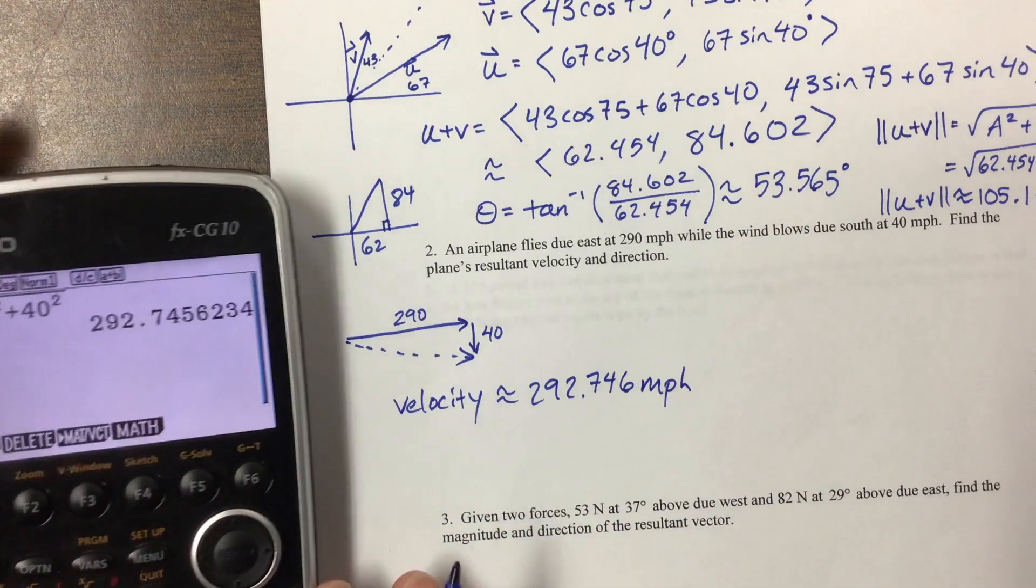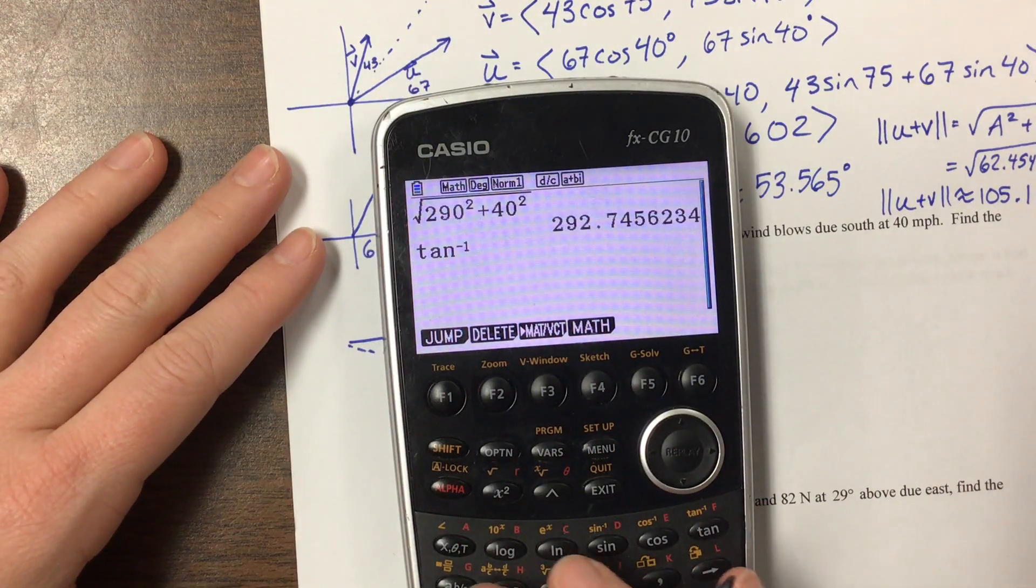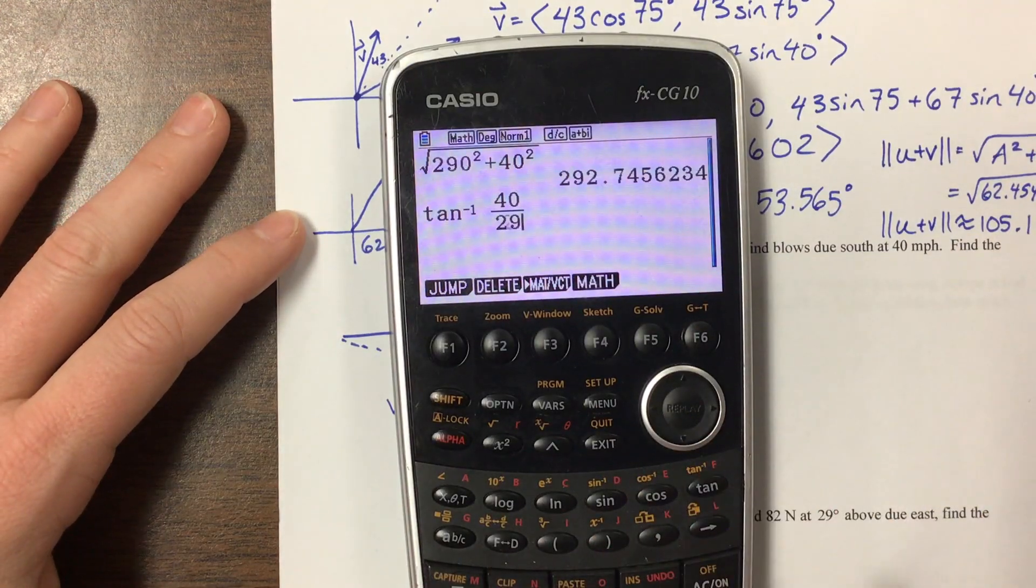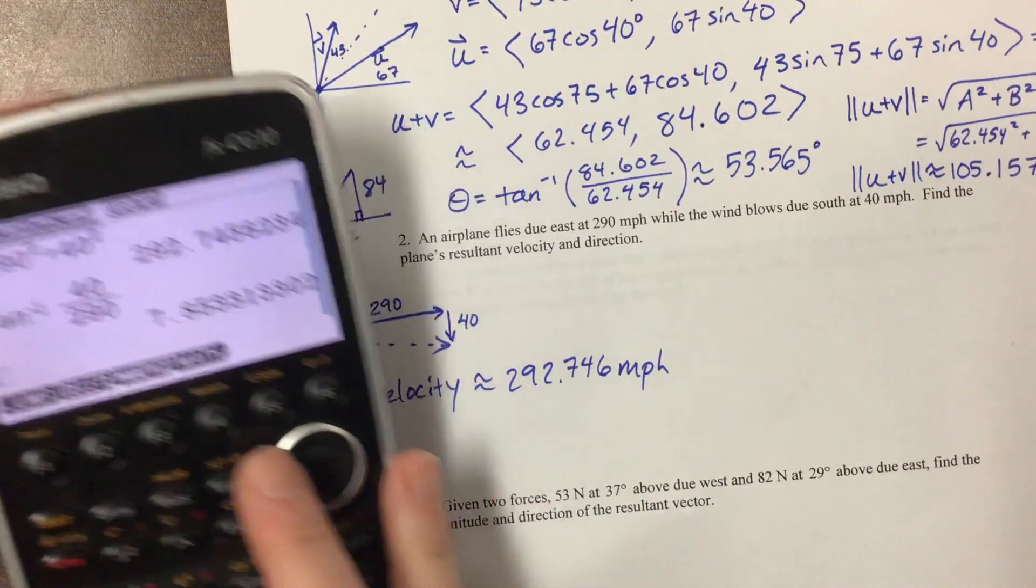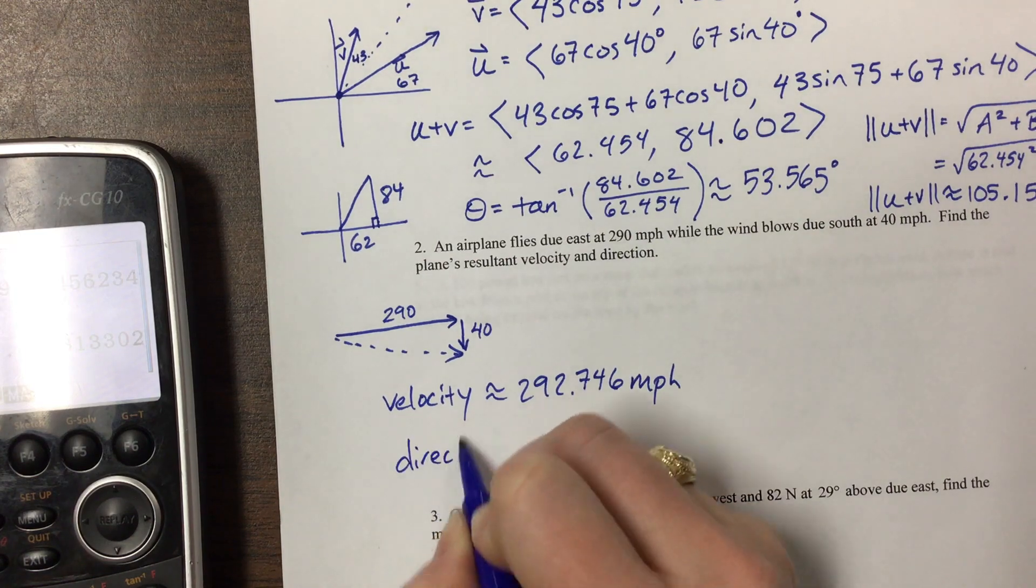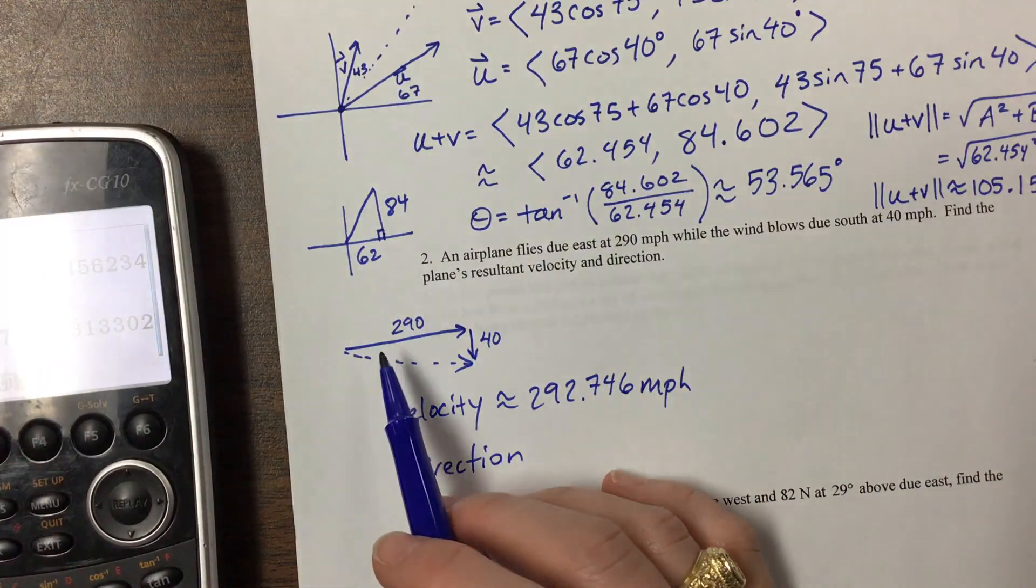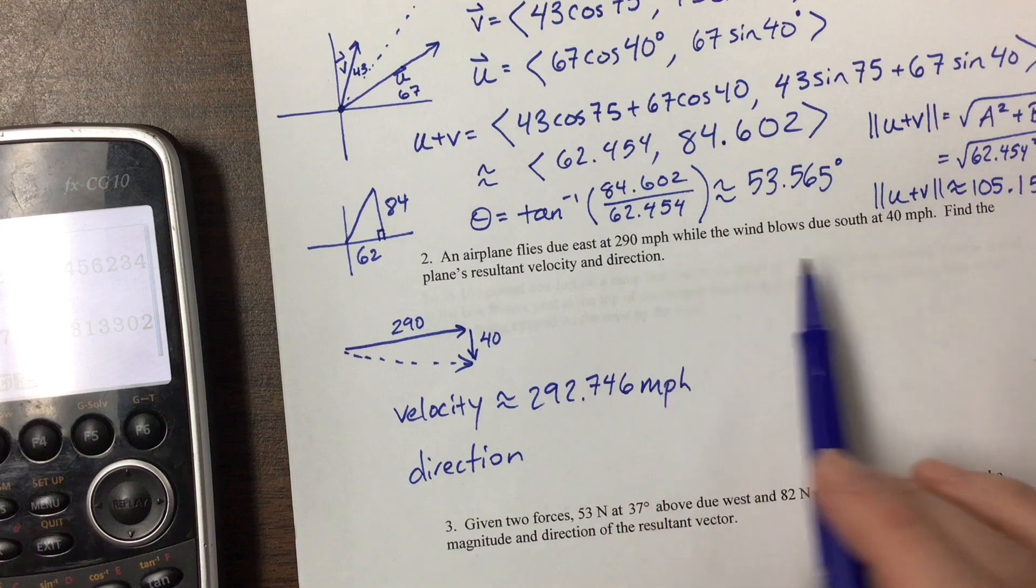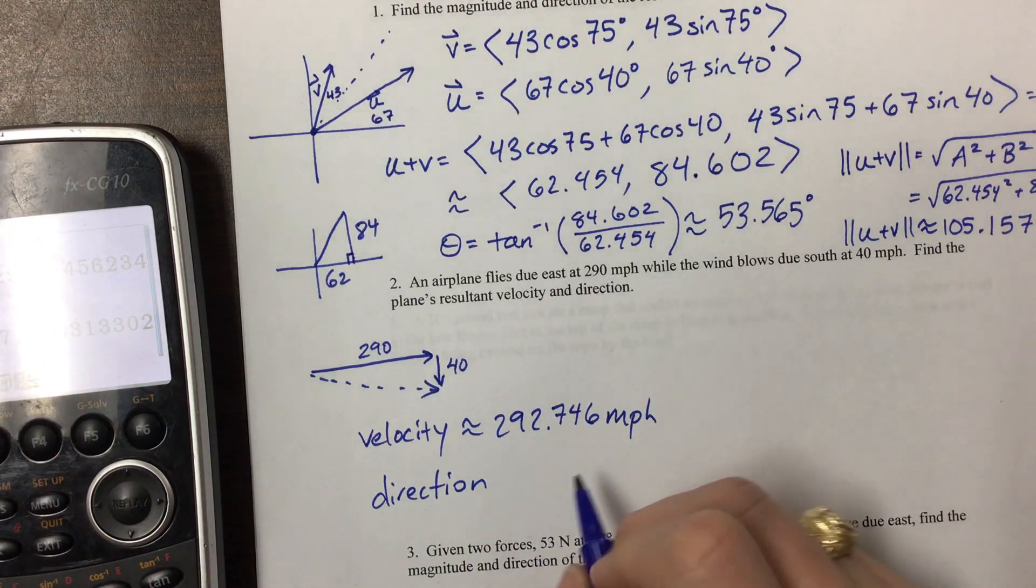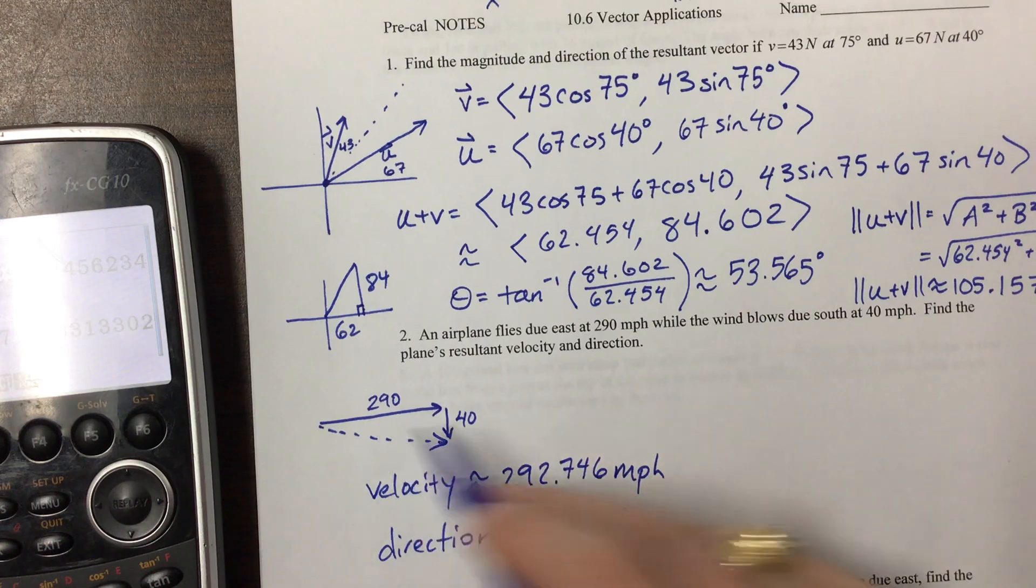And then we can do inverse tangent of, it's opposite over adjacent, 40 over 290. I get that our direction, I found that this angle is 7.853. And if I label it correctly, then I'm fine. In this case, they're talking about things going north and south and east and west. They're east and south. So what I would say is that it's 7.853 degrees, and this went south of east.